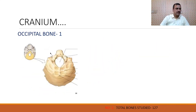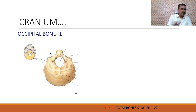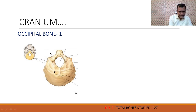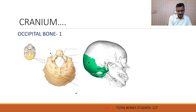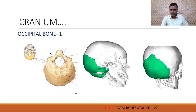Now we come to another bone, that is the occipital bone. Occipital bone is only one bone and this is also a flat bone. It covers the back of the head and some part of this bone forms the base of the skull. This is the inferior view of our skull — here you can see it covers the back and base of the skull. This is the posterior view and this is the side view.